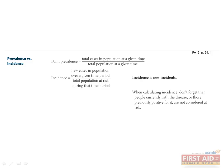Point prevalence is simply the total cases in the population at a given time divided by the total population at risk at the same time. The total cases include both new and old cases. The incidence of a disease is slightly different. It is defined as the number of new cases in a population over a given period of time divided by the total population at risk during that time.